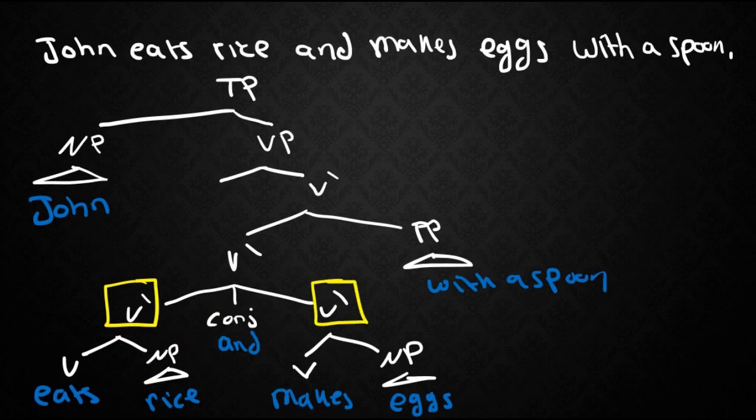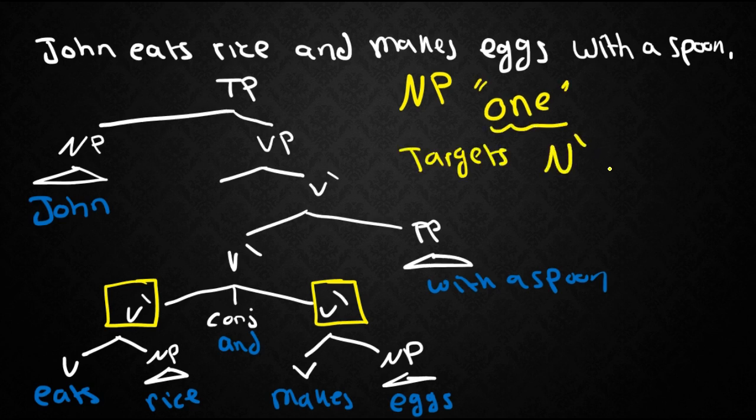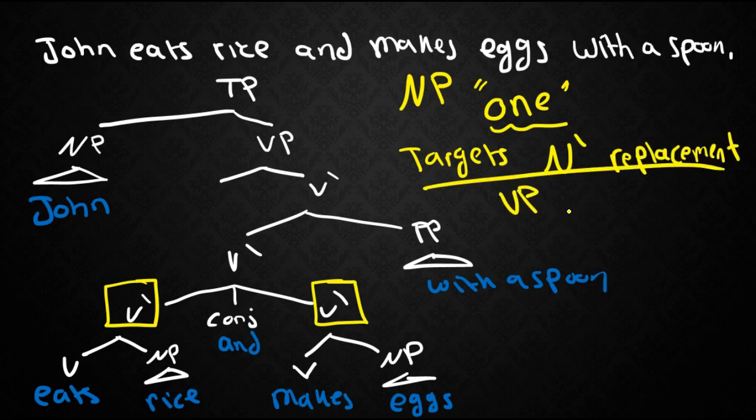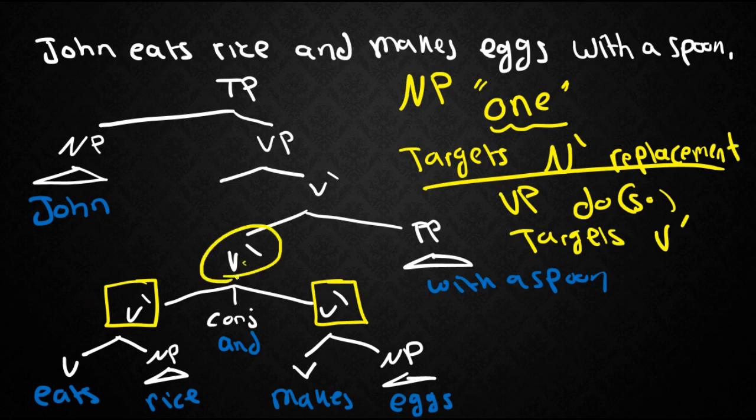So now let me take this opportunity to remind you or help you notice something here. When we were discussing noun phrases we used one replacement. The one used to target n bars for replacement. Likewise in the verb phrase we used a do so replacement and that also targets v bars. So it seems like there's a lot of good evidence toward this intermediate projection which we call the bar level projections.